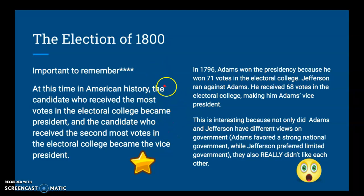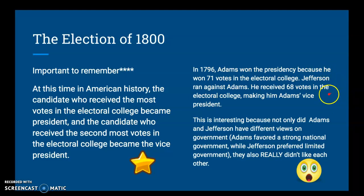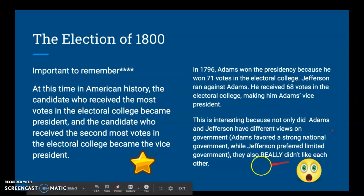We never had any possibility of splitting between political parties like existed back then — we don't have that anymore. In 1796, Adams won the presidency because he won 71 votes in the Electoral College, and Jefferson received 68 votes, making him Adams' vice president. So even though these two guys really didn't like each other, because of the way the chips fell in the Electoral College contest, they became president and vice president — different factions in the government.